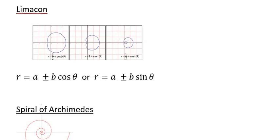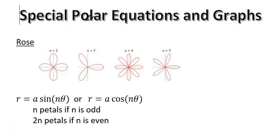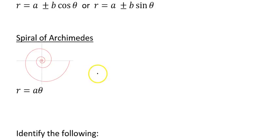Then we have the limaçon — some people say 'lima cone,' some people say 'lima son.' These kind of look like a little bean to me, like a lima bean, and that's how I associate the two. It can have a little dimple, a straight part, or it can loop back in on itself. If it looks kind of like a heart, it can be called a cardioid — the cardioid is the special version of the limaçon.